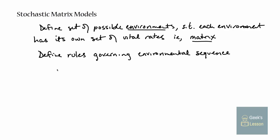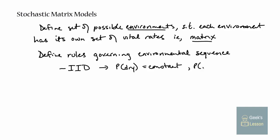There are a lot of different ways you can make your environment variable; I'll talk about two of them. You can have IID environments - independent and identically distributed - which basically means the probability of a dry year is constant. Every year there's some constant probability of getting each environment. This implies the probability of a wet year is also constant and equal to one minus the probability of a dry year. If you're modeling the environment this way, for every time step in your model you draw an environment - wet or dry - based on a random number from a probability distribution, and use the matrix corresponding to that environment in your projections.